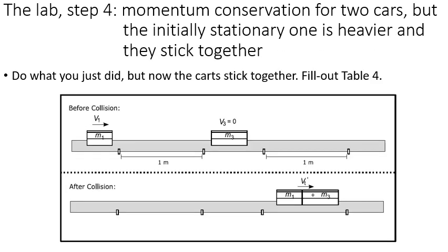Then now step four, part four rather, is we're going to do what we just did where we have a lighter cart that's initially moving, it collides with a heavier cart that's initially at rest, but now the carts are going to stick together. And you're going to have this combined mass here, mass one plus mass two. It's going to take some amount of time to cover this distance. You can use that time to get a velocity, and you can use the combined mass and that velocity to get a momentum.